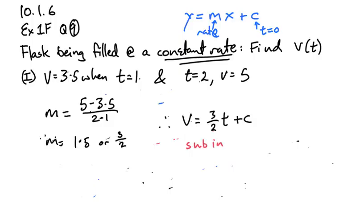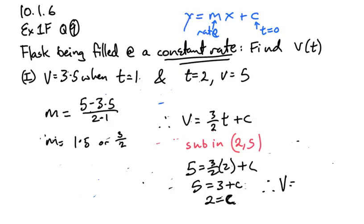This time, I'm going to sub in the second point, t equals 2, because that's going to get rid of that fraction for me. So I'm going to sub in 2 and 5. So when the volume equals 5, I should have 3 over 2 times 2 plus c. 5, the 2's cancel. I've got 3 plus c. Subtract 3 from each side. 2 equals c. That's a crazy looking c. So there we've got the volume. We know the gradient, and we know the initial amount, the y intercept. So volume equals 3 over 2t plus 2. Let's hope that helps. Cheers.